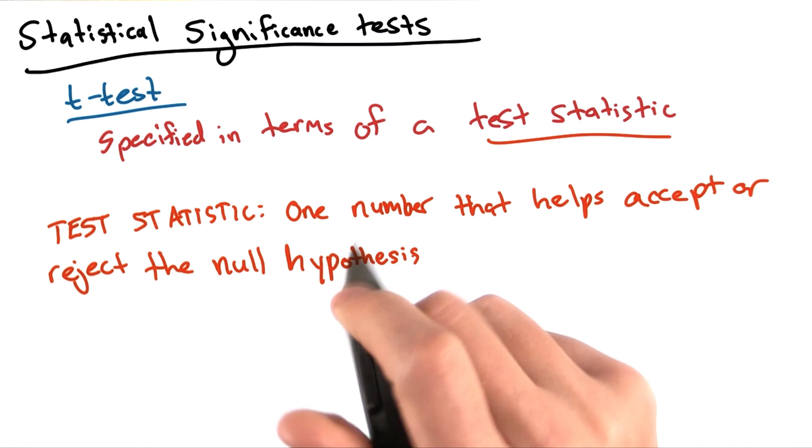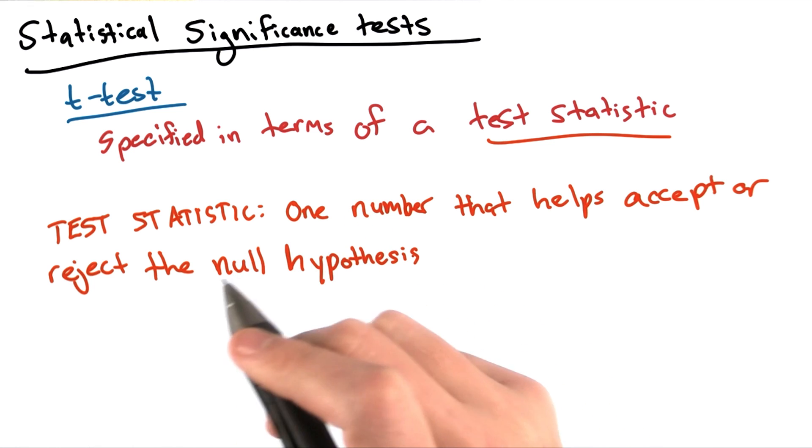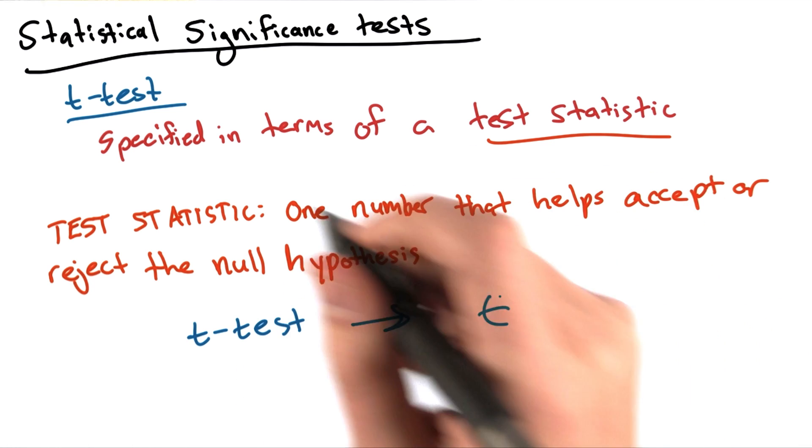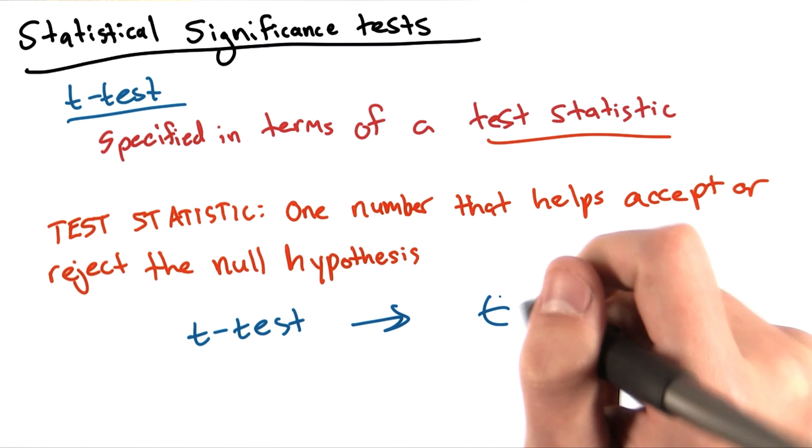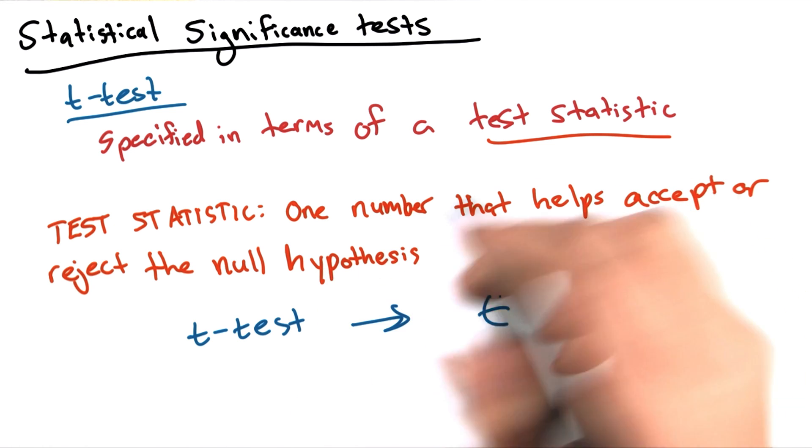When performing a t-test, we compute a test statistic called t. Depending on the value of the test statistic t, we can determine whether or not our null hypothesis is true.